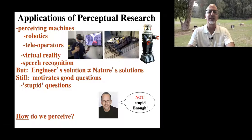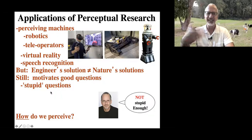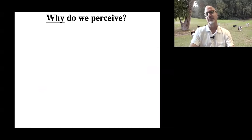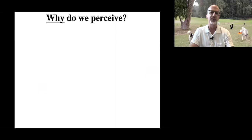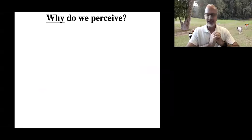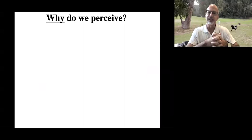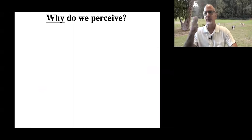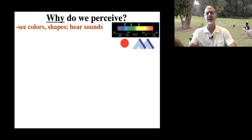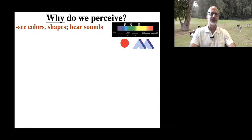A better stupid question than 'how do we perceive' is: why do we perceive? What's the point of perception? What's the point of seeing the world, hearing, touching, smelling, tasting it? My kids when they were really young would say, Daddy, what do you study? I study perception. Why do we perceive? Well, we perceive in order to see colors and shapes, to hear sounds. And my six-year-old would say, okay, what's the point of seeing colors and shapes and hearing sounds?